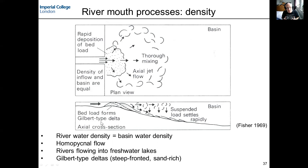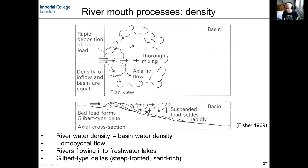This type of delta is common where rivers feed into lakes, where there's not much contrast in density between river and lake water. We develop these very steep-fronted sandy or gravelly deltas, sometimes referred to as Gilbert-type deltas. Gilbert was the first person to describe these, looking at gravelly deltas of Pleistocene age in the USA. This condition — river water having the same density as the basin water — is referred to as homopycnal flow.